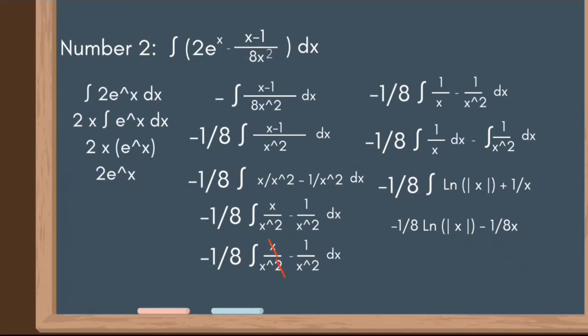Moving on to the second part: the negative integral of (x-1)/(8x²)dx. We use the property of integrals and factor out 1/8, giving us negative 1/8 times the integral of (x-1)/x²dx. We then separate the fraction into two fractions: negative 1/8 times the integral of (x/x² - 1/x²)dx, which simplifies to negative 1/8 times the integral of (1/x - 1/x²)dx. Using the property of integrals to separate gives us negative 1/8 times [integral of 1/x dx minus integral of 1/x² dx].